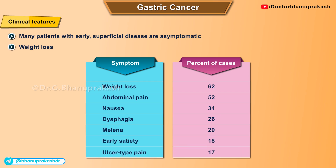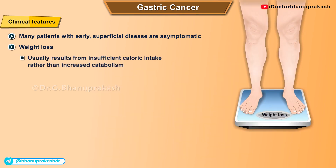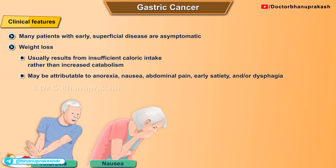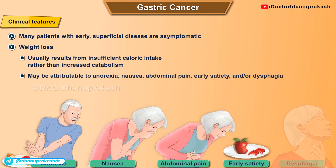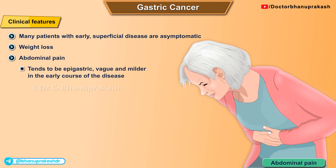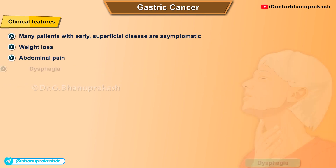Other symptoms include nausea in 34 percent, dysphagia in 26 percent, melena in 20 percent, early satiety in 18 percent, and ulcer-type pain in 17 percent. Weight loss usually results from insufficient caloric intake rather than increased catabolism, attributable to anorexia, nausea, abdominal pain, early satiety, or dysphagia. Abdominal pain tends to be epigastric, vague, and mild early in the disease but more severe and consistent as the disease progresses.